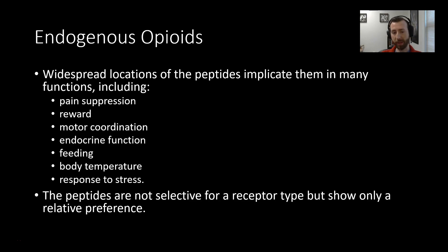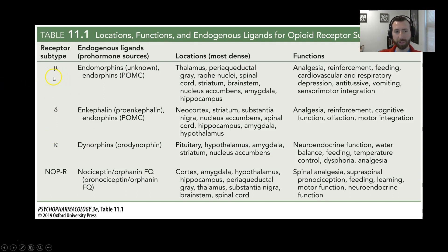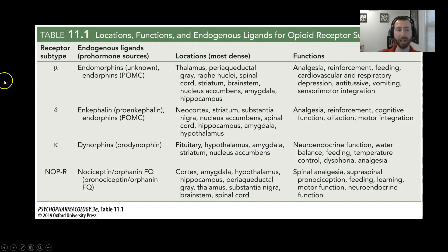The peptides aren't necessarily selective for a receptor type, but they do show a relative preference in terms of their binding affinity, so certain peptides have a higher tendency to bind with certain receptors. Don't feel like you need to memorize all of that, but here's a nice table from your book showing, in a condensed format, the receptor subtype, the endogenous ligands that have a high affinity for that receptor subtype, the locations where the signaling is the most dense, and the functions that it maps onto. This is basically everything we've talked about in this lecture condensed down to one nice table for your reference and studying.